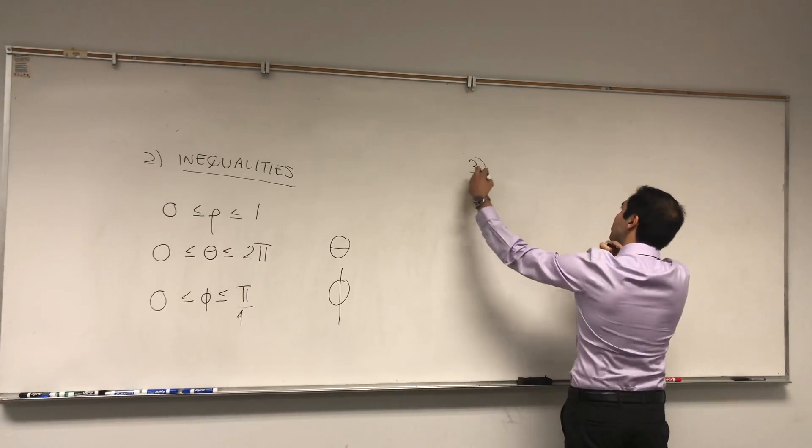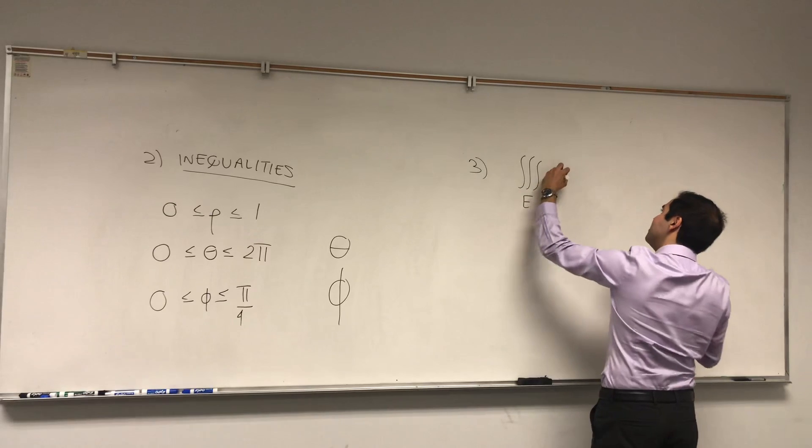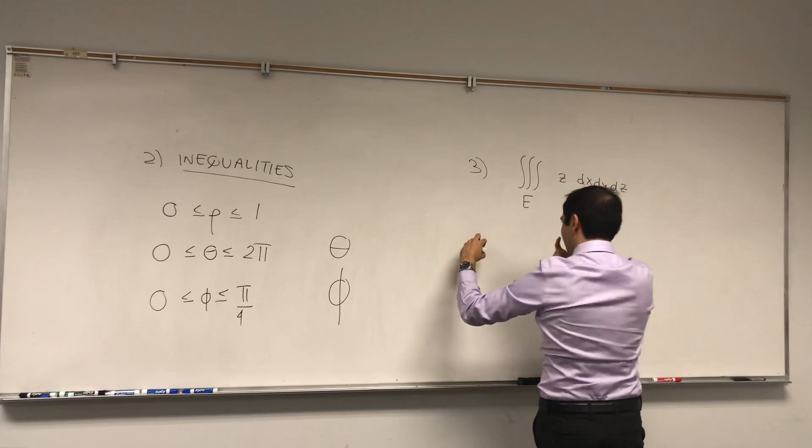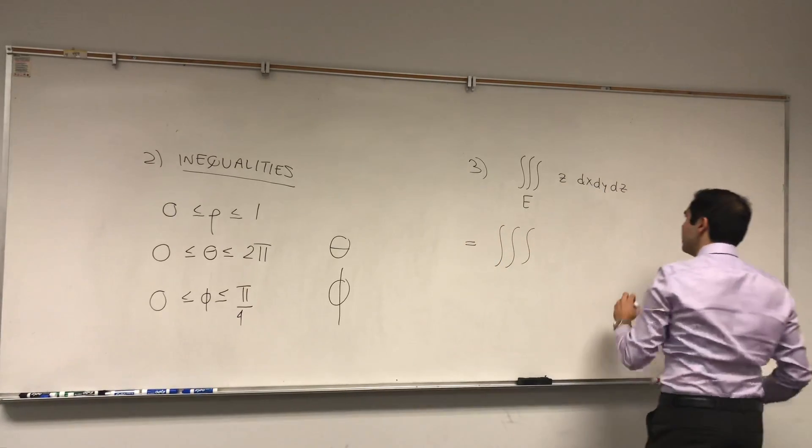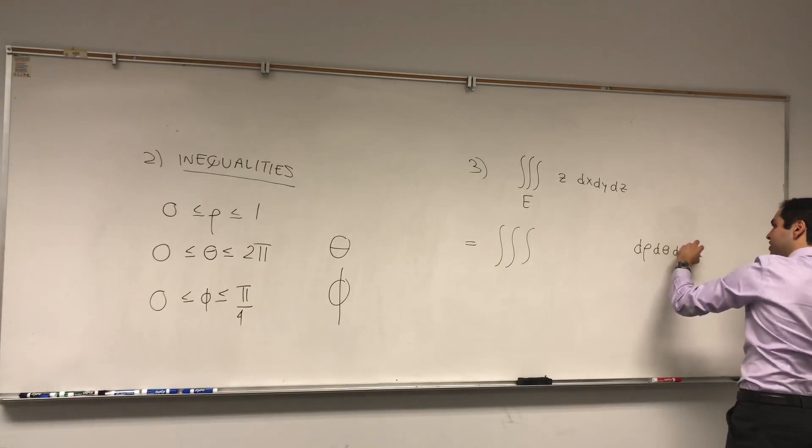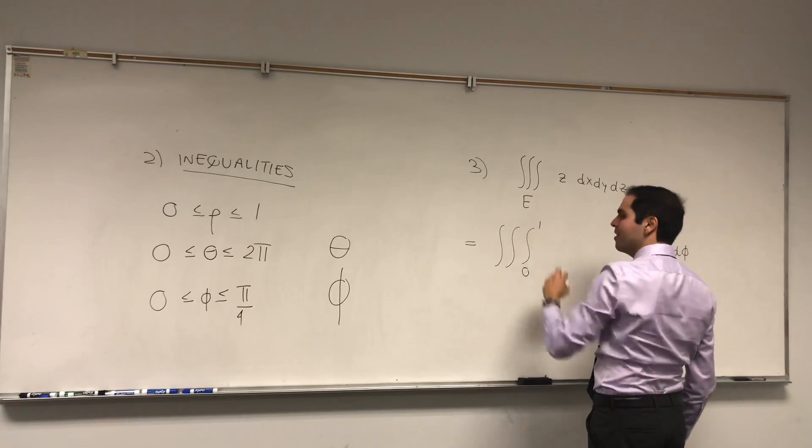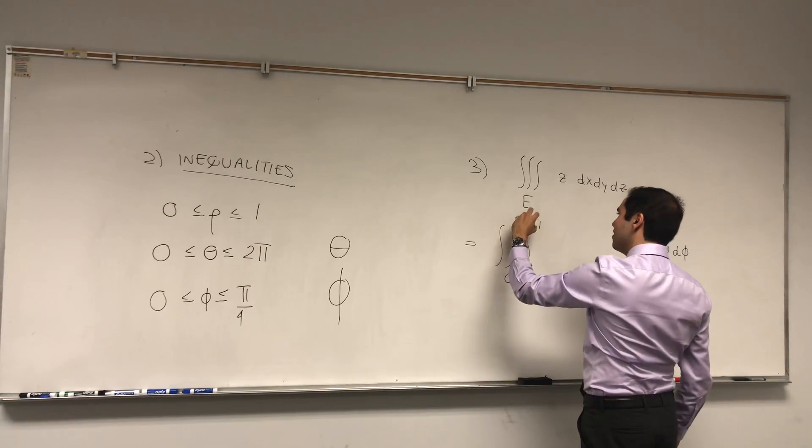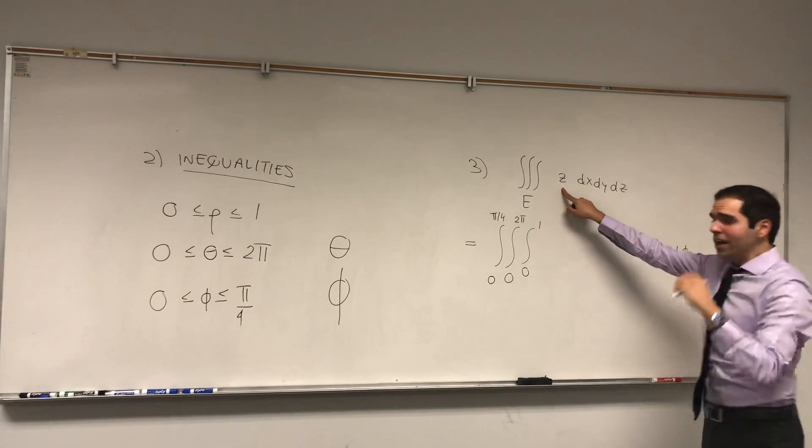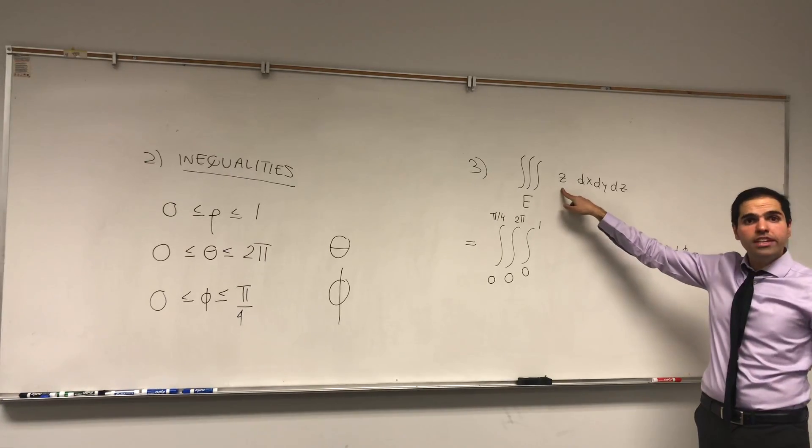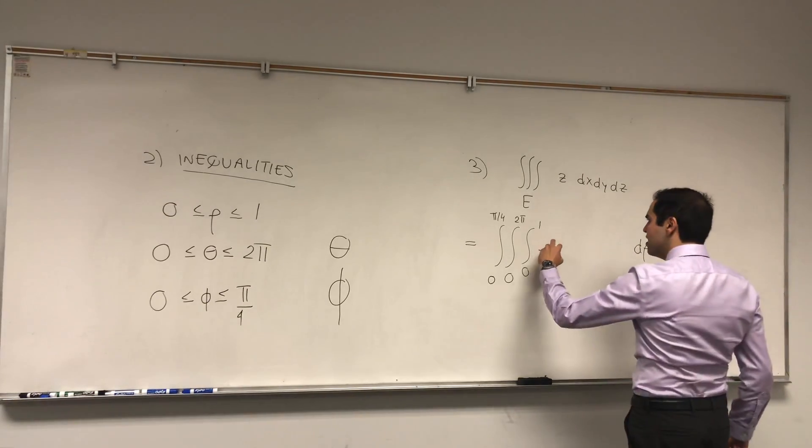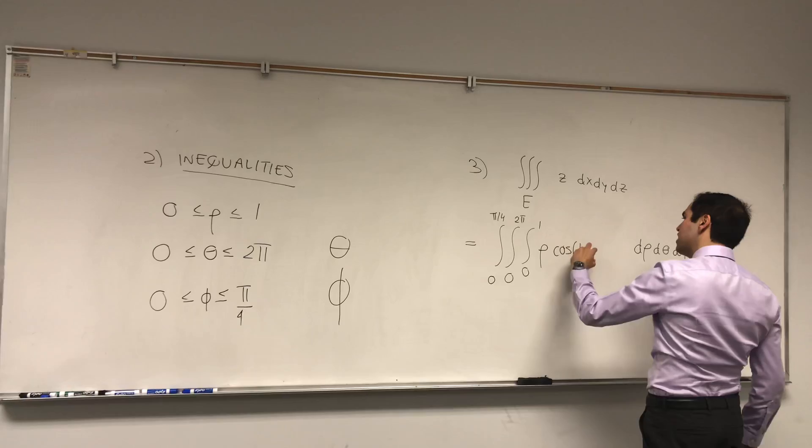Okay, and that's wonderful. Now, all you need to do is integrate the function z with respect to dx, dy, dz. What this becomes, you put your new inequalities, d rho, d theta, d phi. Rho is between 0 and 1. Theta between 0 and 2 pi. And phi between 0 and pi over 4. What is z? If you do, I mean, I have this video on derivation of spherical coordinates. In terms of spherical coordinates, z isn't too bad. Rho cosine of phi.